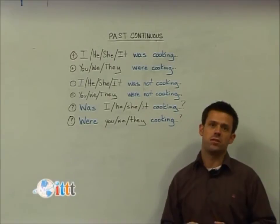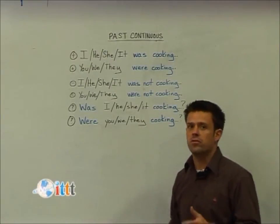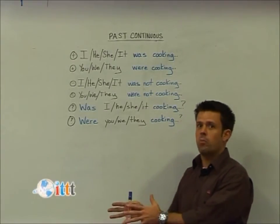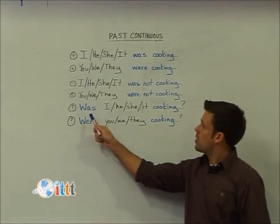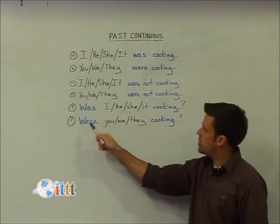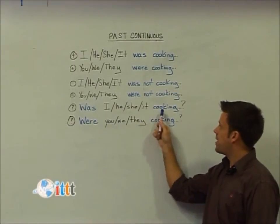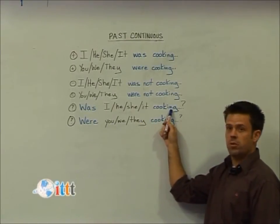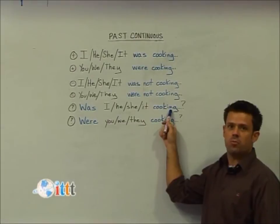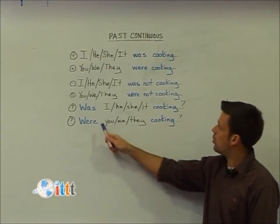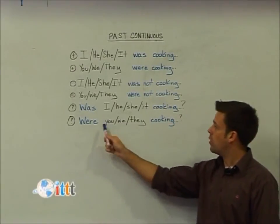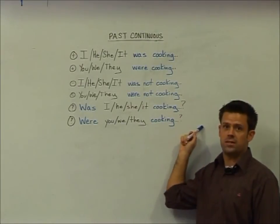In order to form the question for the past continuous tense, we're going to invert our subject and our helping verb. We start our question with was or were, depending on our subjects, and we keep our present participle form of the verb, which is our main verb in the question. Was he cooking last night or were you cooking last night?